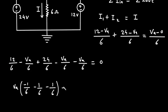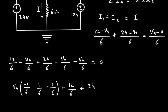This gives plus 12/6 plus 24/6, and taking VA common with the remaining coefficient terms, the equation equals 0.